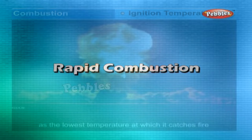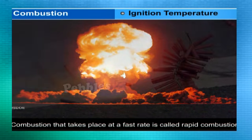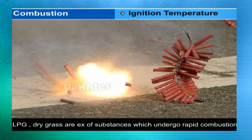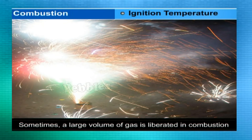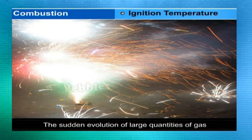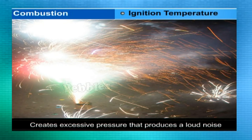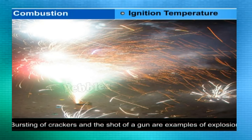Rapid combustion: combustion that takes place at a very fast rate is called rapid combustion. LPG and dry grass are examples of substances which undergo rapid combustion. Sometimes a large volume of gas is liberated in combustion besides the production of heat and light. The sudden evolution of large quantities of gas creates excessive pressure that produces a loud noise — such combustion is known as an explosion. The bursting of crackers and the shot of a gun are examples of explosion.